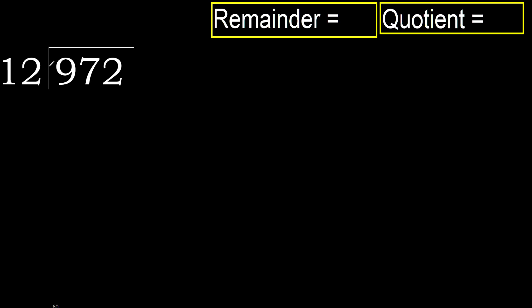972 divided by 12. 9 is less, therefore next. 97 is not less, therefore we work with 97. 12 multiplied by which number is nearest to 97, but not greater.